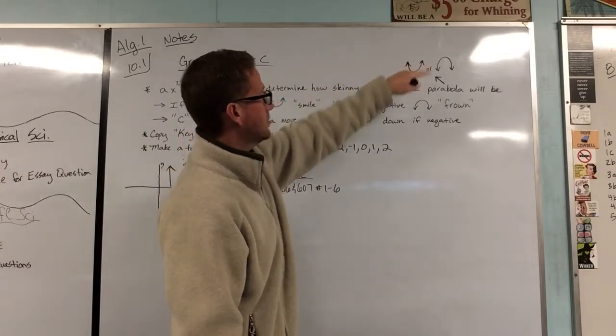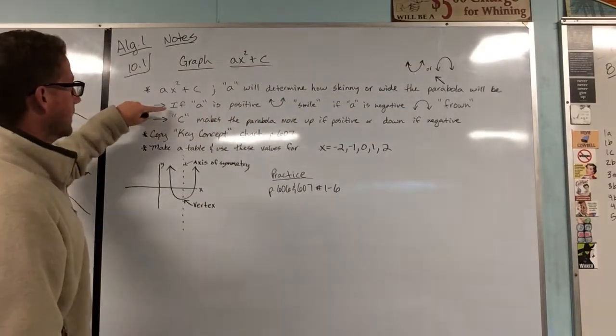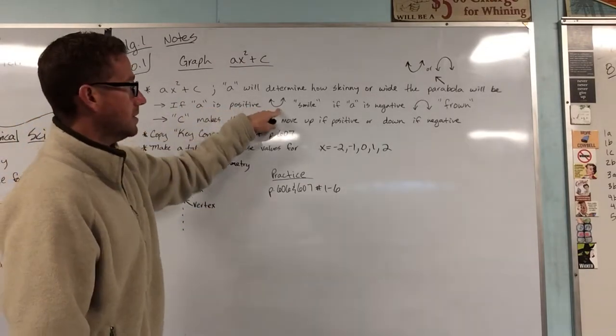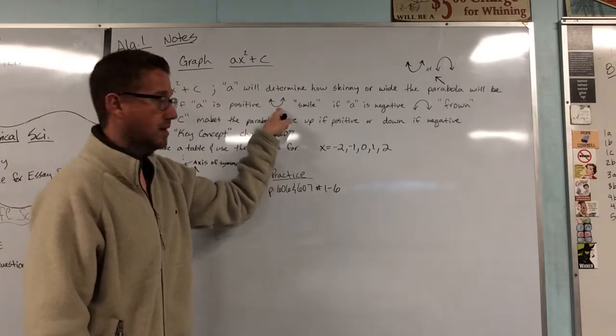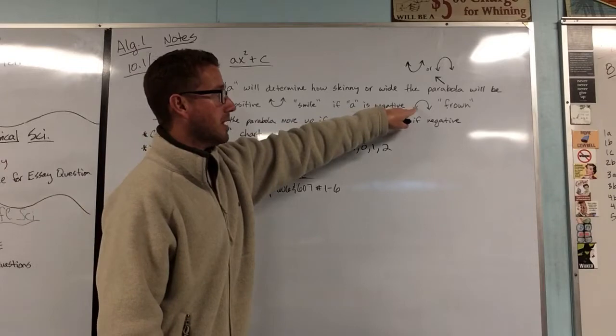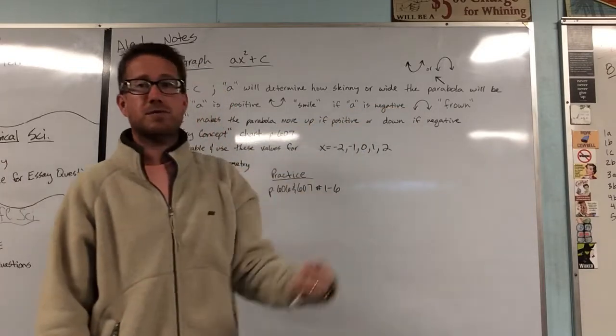All right, so these two shapes up here, if a is a positive, it's going to make a parabola that looks like a little smiley face. If a is a negative, it's going to make a parabola that looks like a little frown.